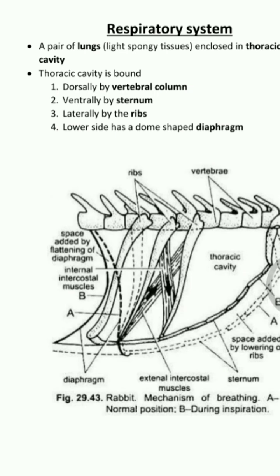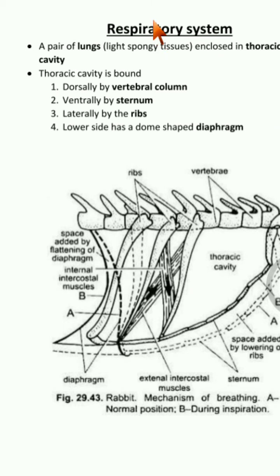Hello students, today we will see about the respiratory system of a rabbit. Rabbit is a representation of the mammalian category — rabbit is a mammal, so its respiratory system is more or less similar to the human being's respiratory system.